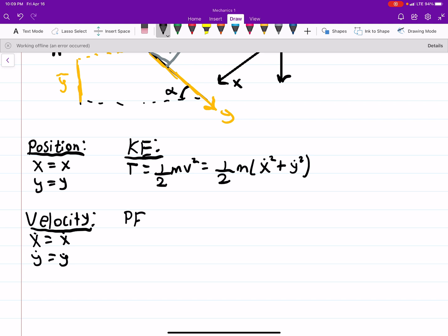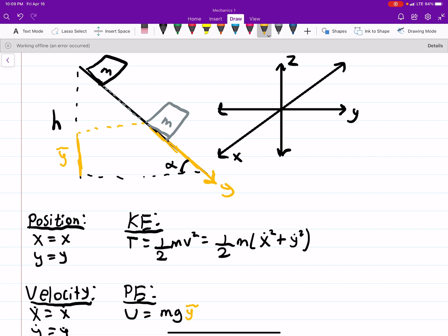And then the potential energy u is equal to mg and then y tilde. That is the height of our block at any given point. Now what is y tilde? Well, this whole length here is our h.